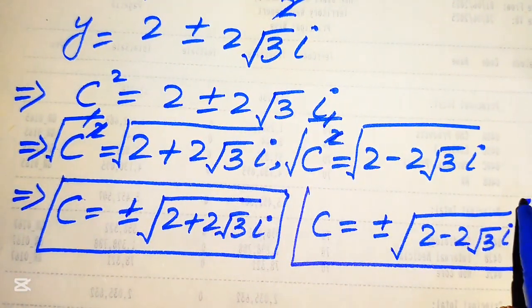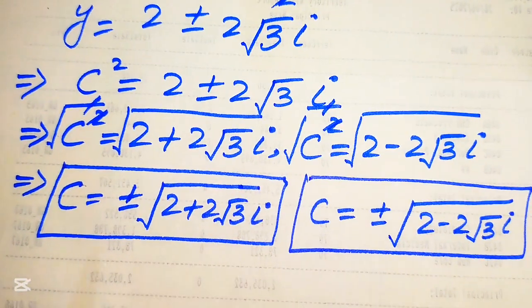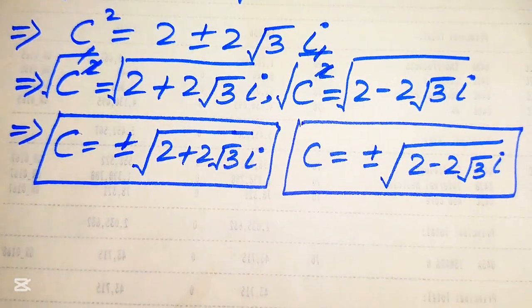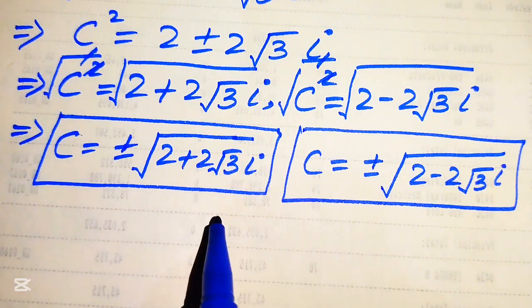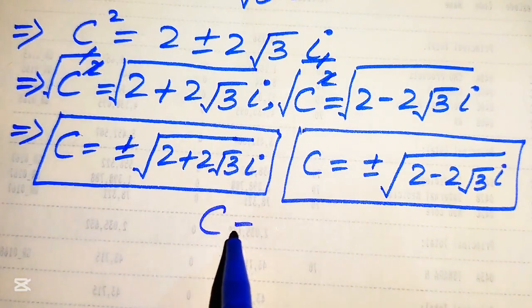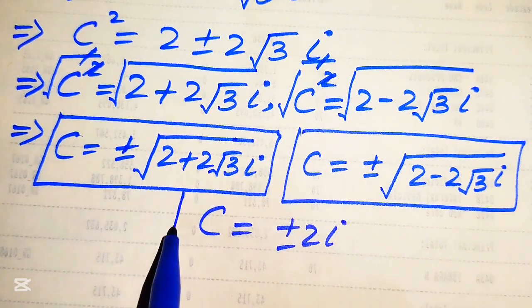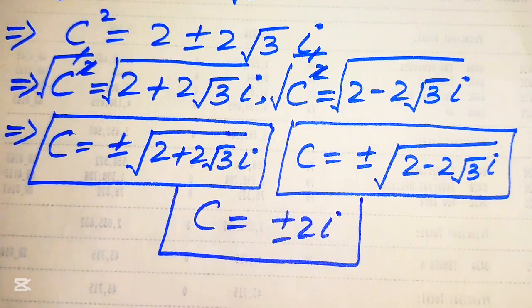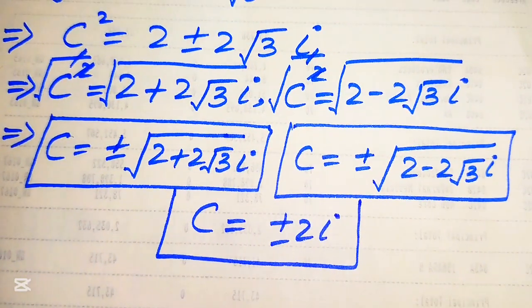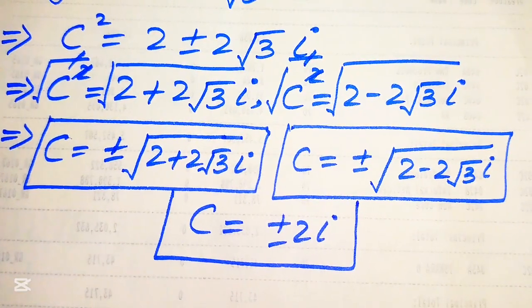In total, we have all six complex roots of the equation: c = ±2i from Case 1, and c = ±√(2 + 2√3·i) and c = ±√(2 - 2√3·i) from Case 2. These are the six complex roots — this is the final answer. Thank you for watching, please subscribe to my channel for more videos.